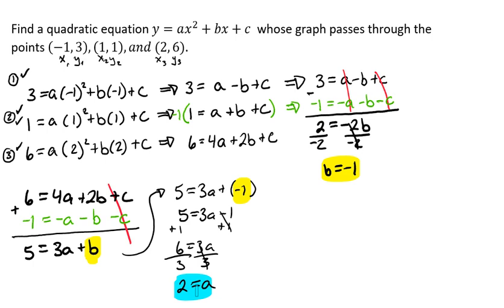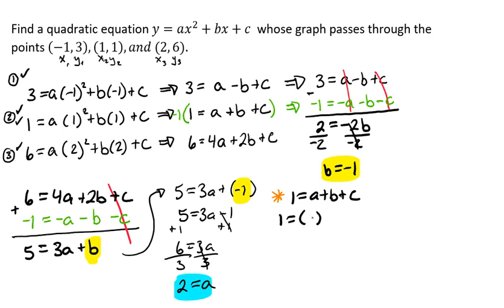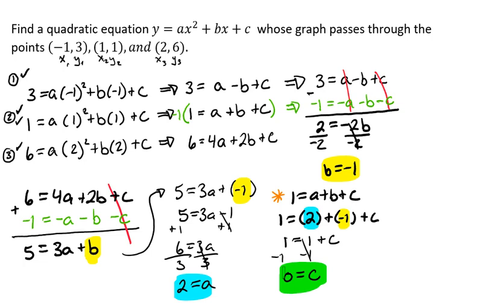Now we have both a and b, so we can plug those into any one of our equations. Equation two looks like the easiest choice: one equals a plus b plus c. Plugging in a equals two and b equals negative one, we get one equals two minus one plus c, which simplifies to one equals one plus c. Subtracting one from both sides gives us c equals zero.